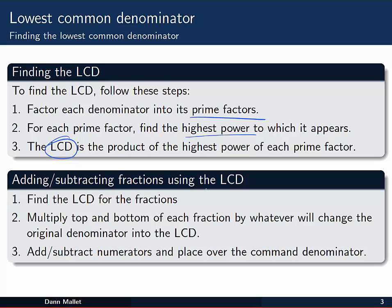Then when we want to add and subtract fractions using that lowest common denominator, what we need to do of course first of all is find it, but then we multiply the top and the bottom of each fraction in our sum or difference by whatever we need to in order to change the original denominator into the lowest common denominator. Remembering that any quantity over itself is equal to 1, that means we won't change the value of our fractions, just what they look like. Finally, we can add and subtract the numerators and place them over the common denominator.